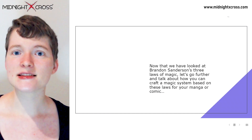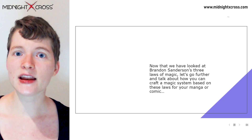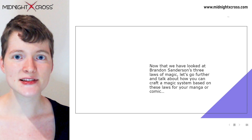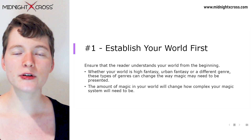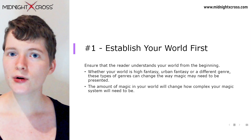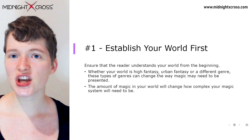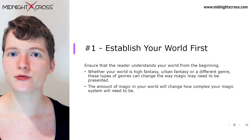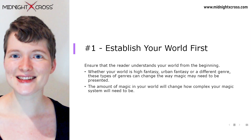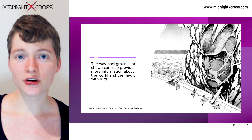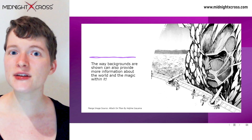Now that we've looked at Brandon Sanderson's Three Laws of Magic, let's talk about how you can apply these techniques and others to creating magic power systems in your manga or novel. Number one: establish your world first. Ensure that your audience understands the world from the very beginning. Whether your world is high fantasy, urban fantasy, or more supernatural, different genres change the way you present that world and the magic within it. The amount of magic in your world will change how complex your magic system needs to be.